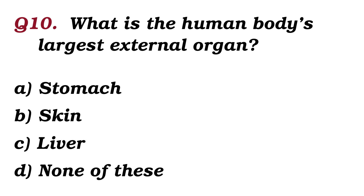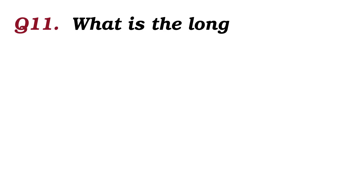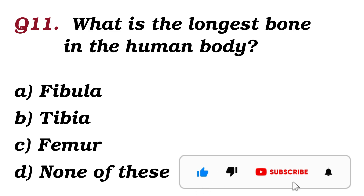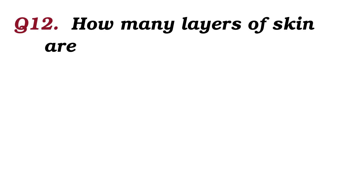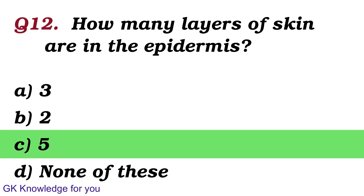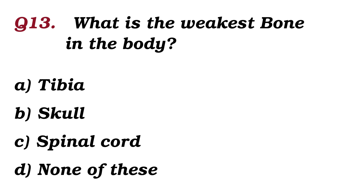What is the human body's largest external organ? The answer is skin. What is the longest bone in the human body? The answer is femur. How many layers of skin are in the epidermis? The answer is 5. What is the weakest bone in the body? The answer is the spinal cord.